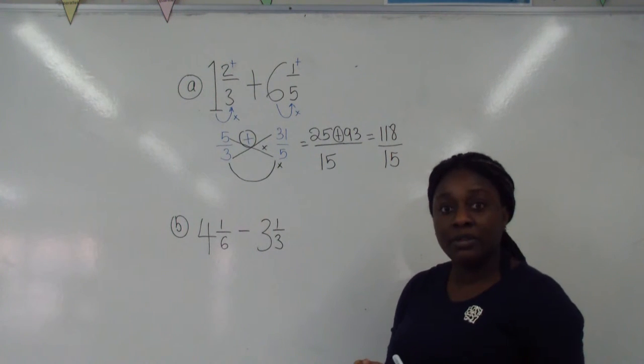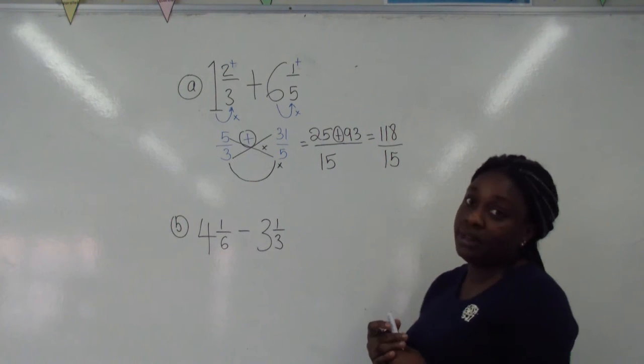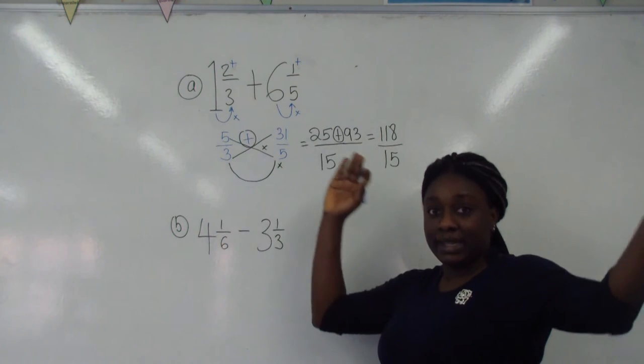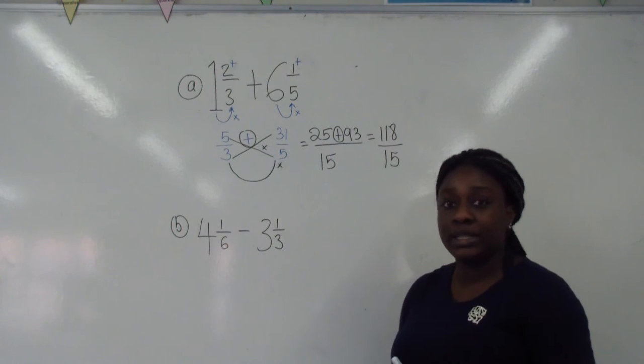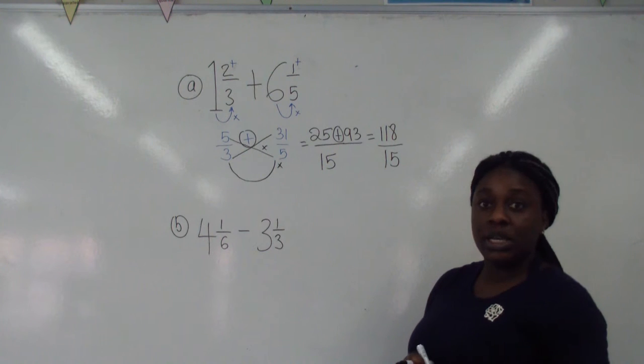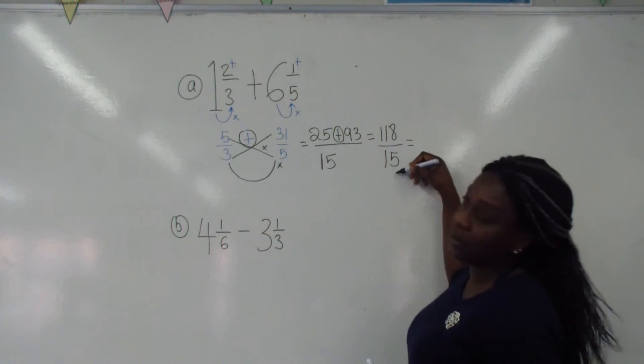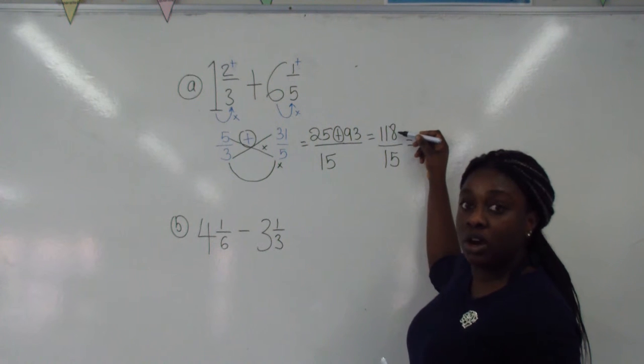This is what we call a top-heavy fraction. We cannot leave our answer like this because 15 is a small number and it's carrying a big fraction. So what we need to do to change it back into mixed numbers is to see how many times 15 goes into 118.